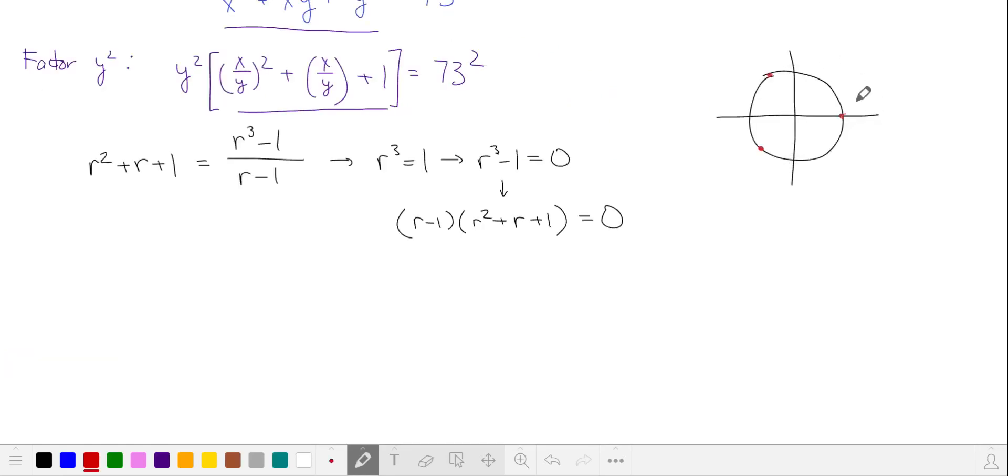On the unit circle, these solutions are evenly distributed between 1, 2π over 3, and 5π over 3. So we can further factor this with r minus e to the power of 2π over 3i, and r minus e raised to the power of 4π over 3 times i.